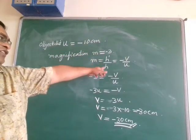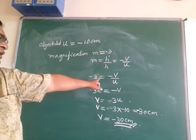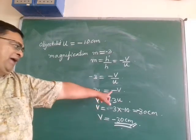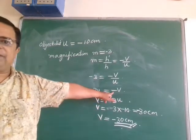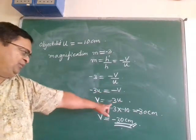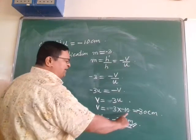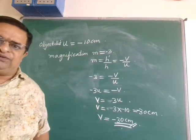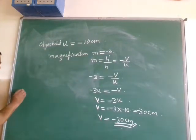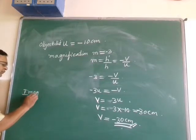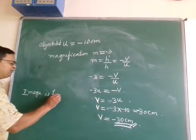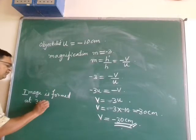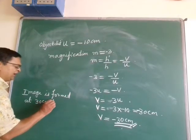Using m equals minus v by u: minus 3 equals minus v by u. Both minus signs cancel, giving v equals 3u equals 3 times minus 10 equals minus 30 centimeters. The image is formed at a distance of 30 centimeters in front of the mirror, to the left of the mirror.